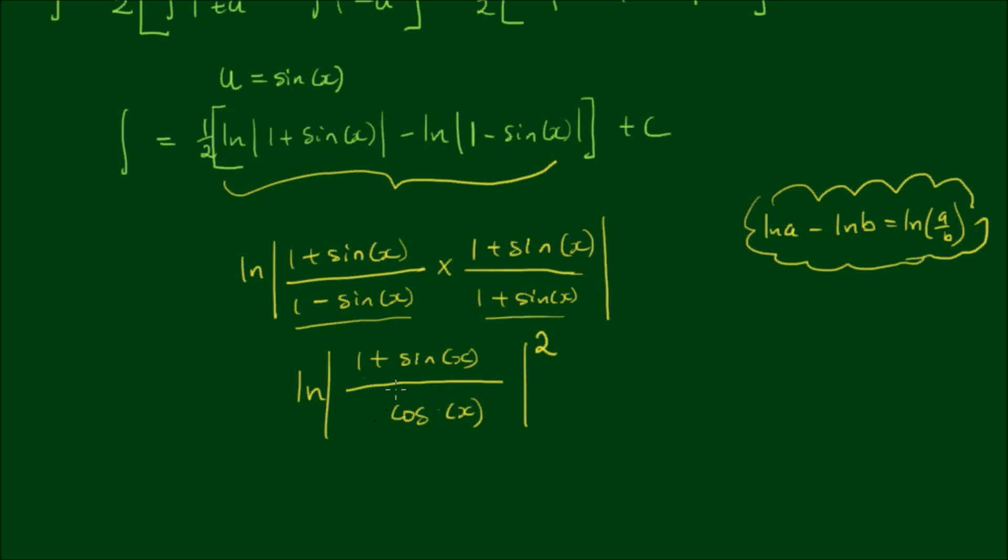And now I can separate this into two fractions. I can write this as the log of 1 over cos x times 1 plus sin x over cos x. And this is all squared. So can you see now that 1 over cos x we can write this more simply as sec x, and sine over cos x we can write this as tan x. So we still have the half at the front.